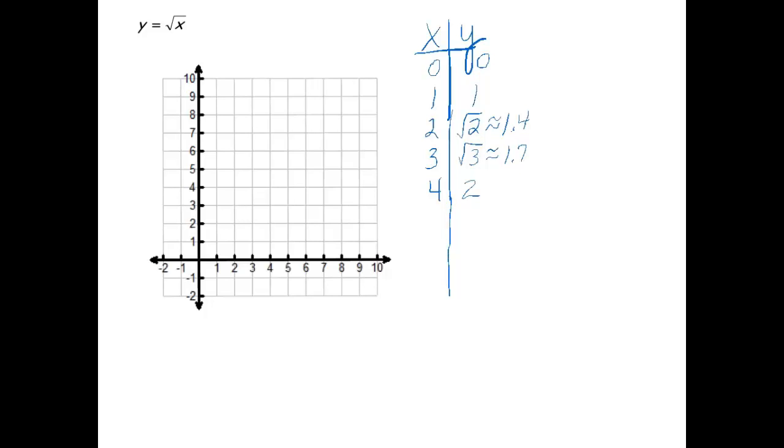I'm just going to finish the rest of my table with some more perfect squares here. So 9, the square root would be 3. The next one would be 16 to get us 4 and so on.